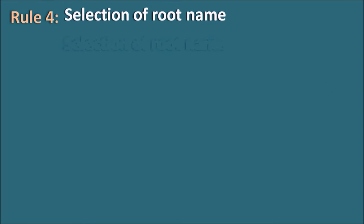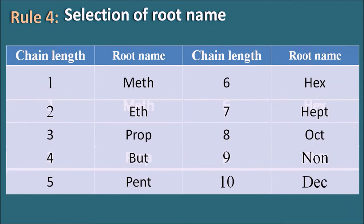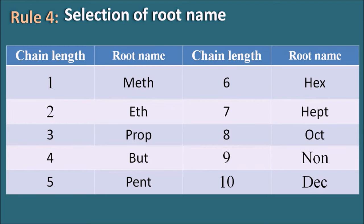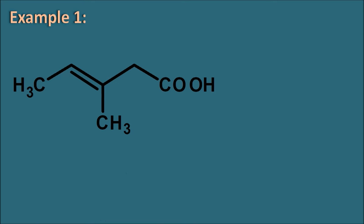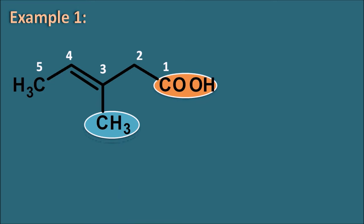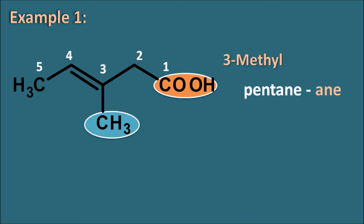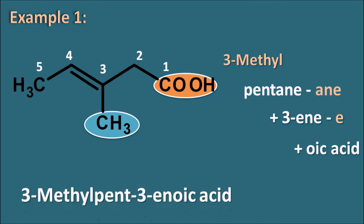Rule 4: selection of the root name based on the number of carbons: 1 is meth, 2 is eth, 3 is prop, 4 is but, 5 is pent, and so on. Example: carboxylic acid is principal functional group, numbered 1 through 5 with methyl at position 3. The chain is pentane, but with a double bond we change '-ane' to '-en' (3-en), and since there is a functional group we replace '-e' with the suffix '-oic acid'. The name is 3-methylpent-3-enoic acid.